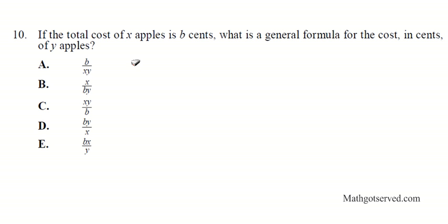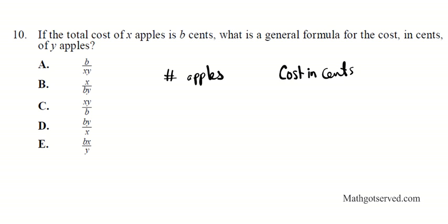Number 10: if the total cost of x apples is b cents, what is the general formula for the cost in cents of y apples? We're going to make two columns — number of apples on the left and cost in cents on the right — and form a proportion. We know x apples cost b cents, so y apples will cost j cents, where j is what we're solving for.